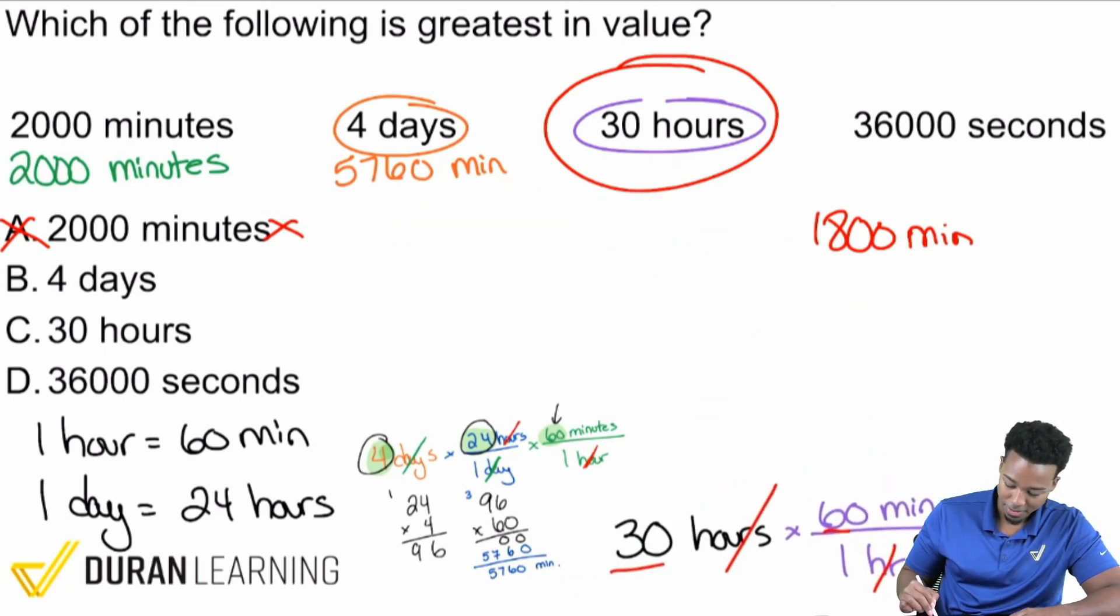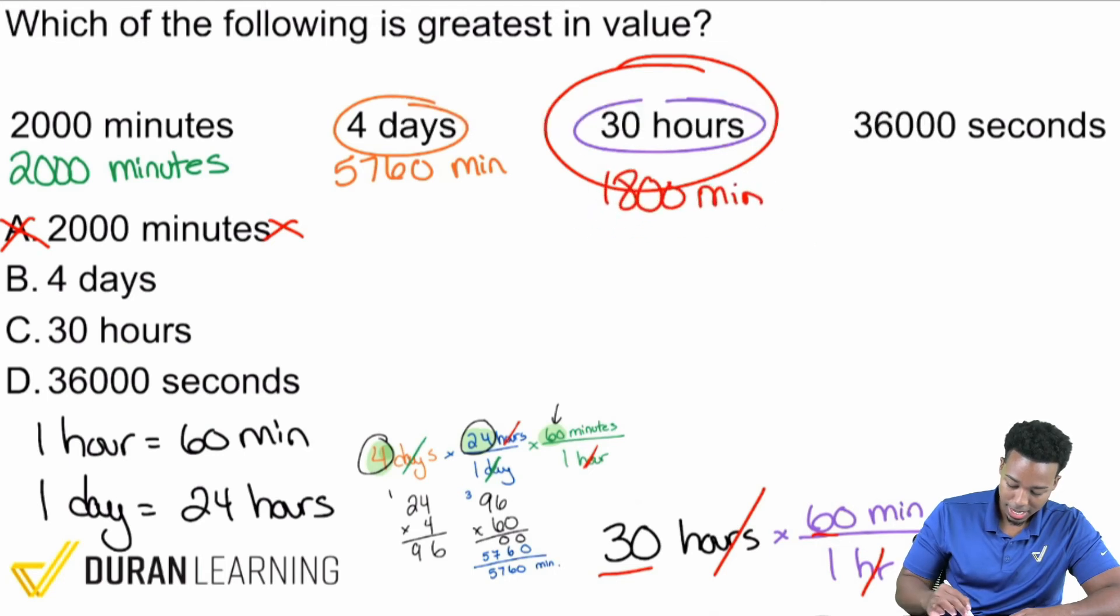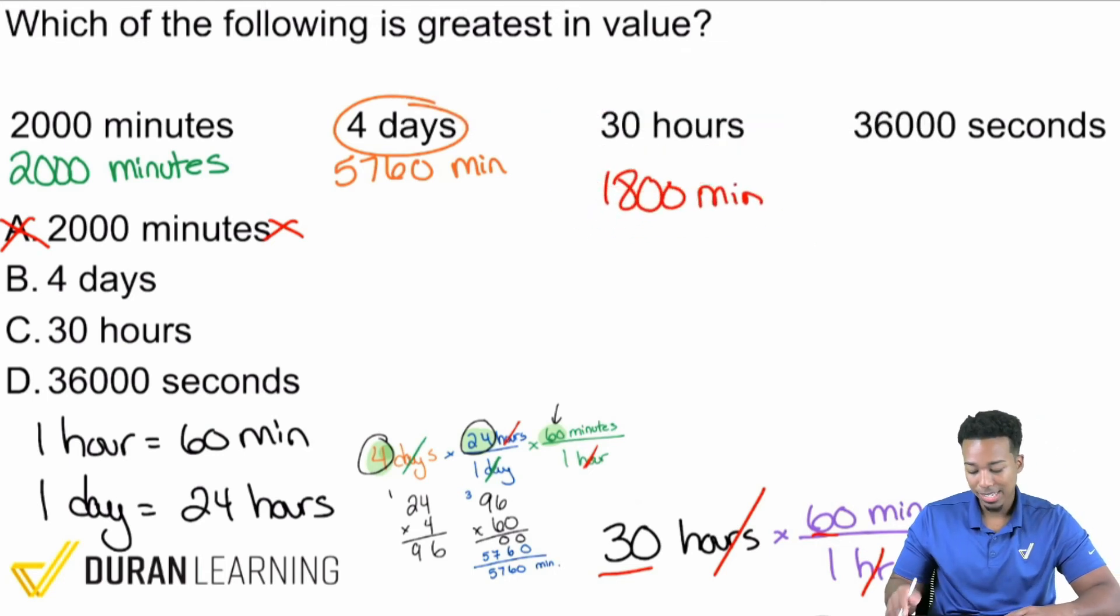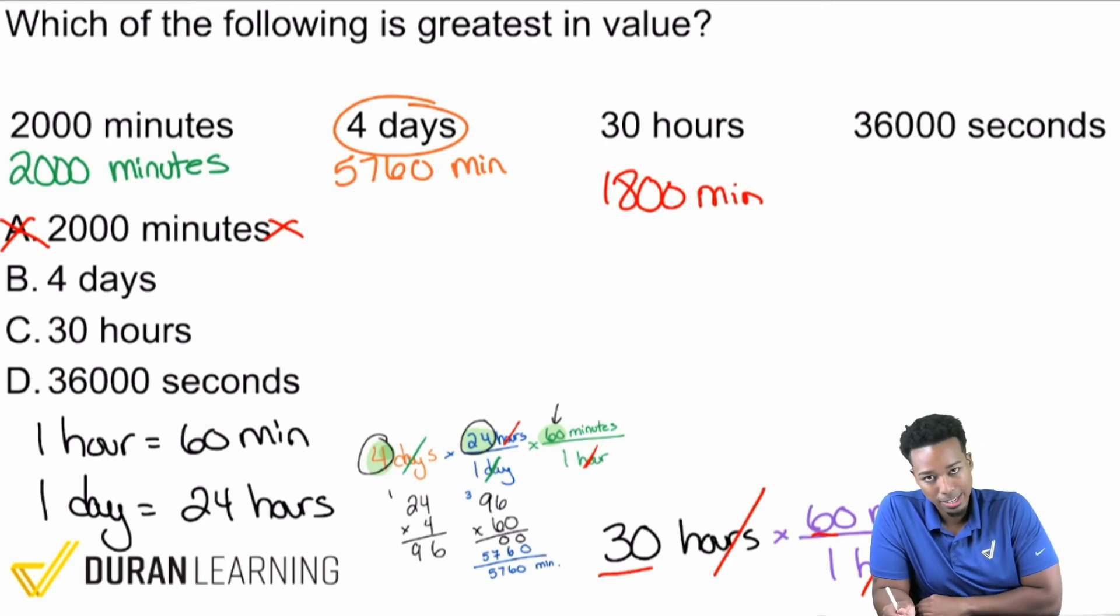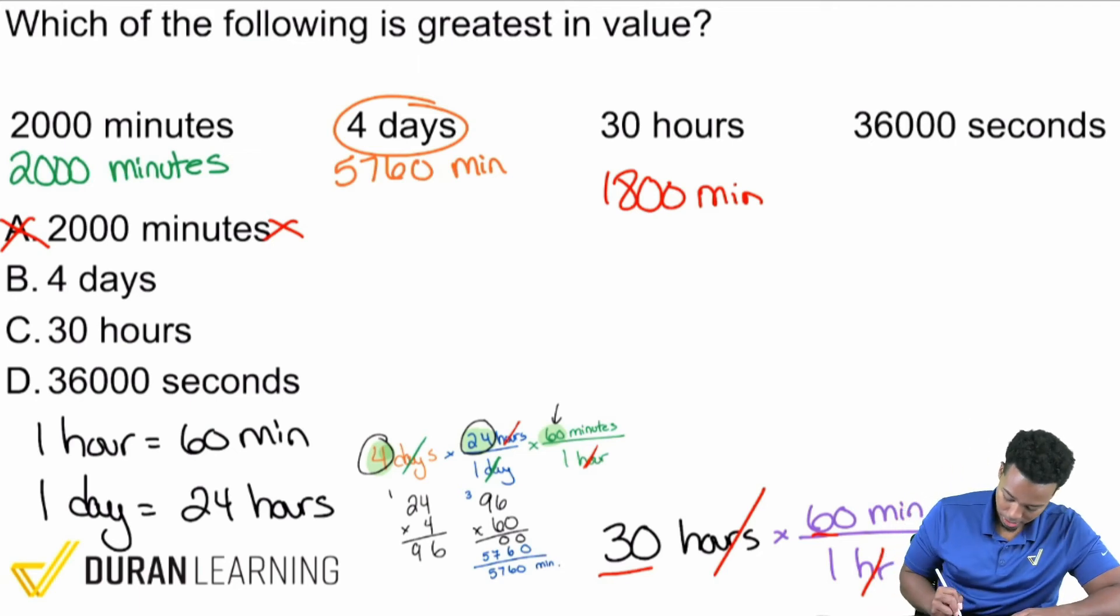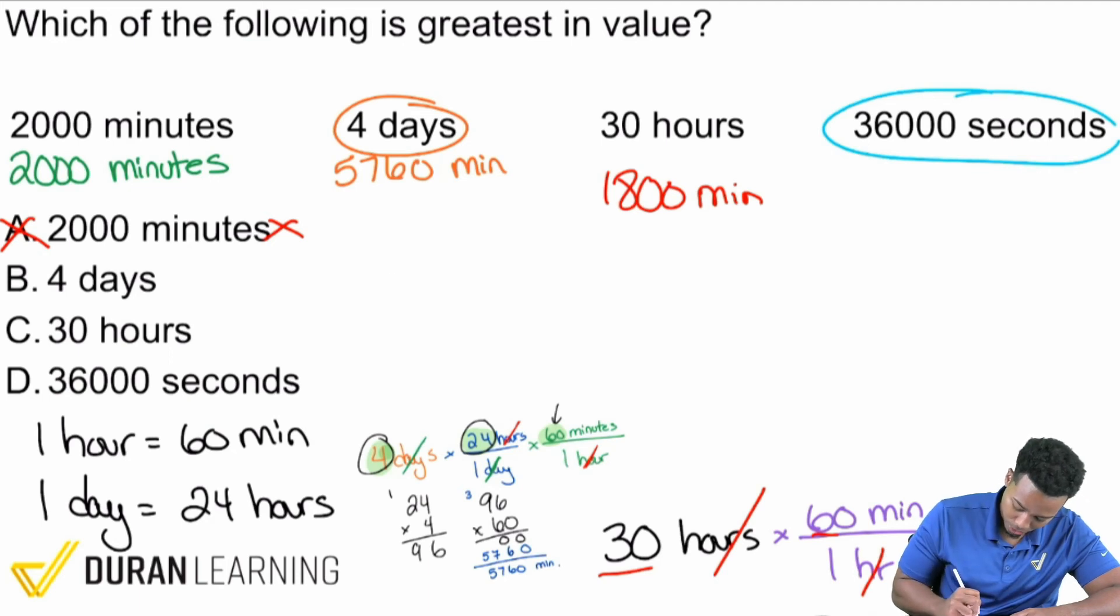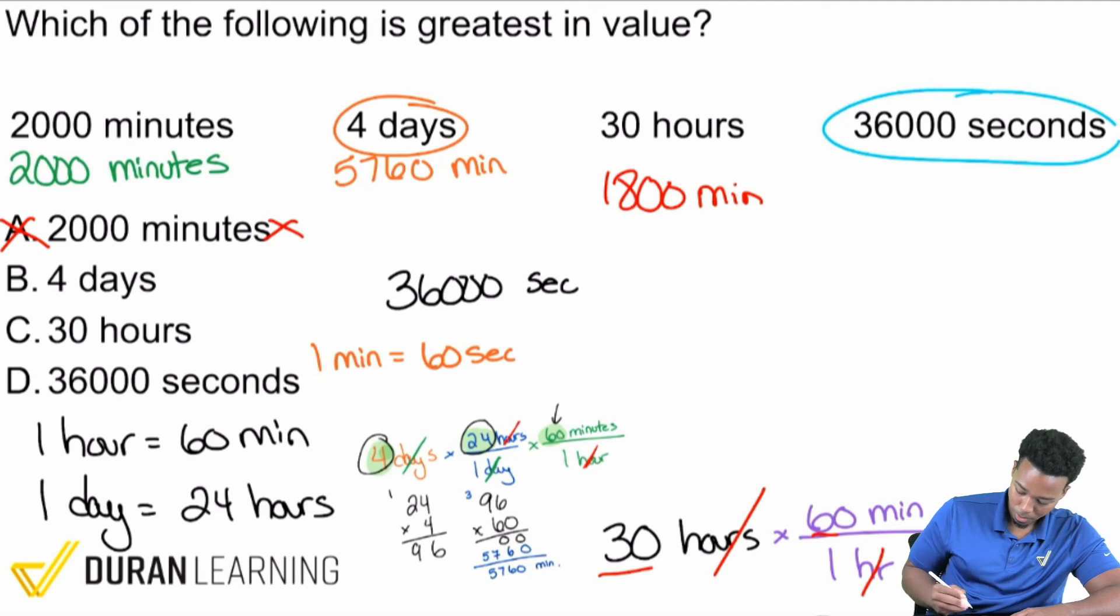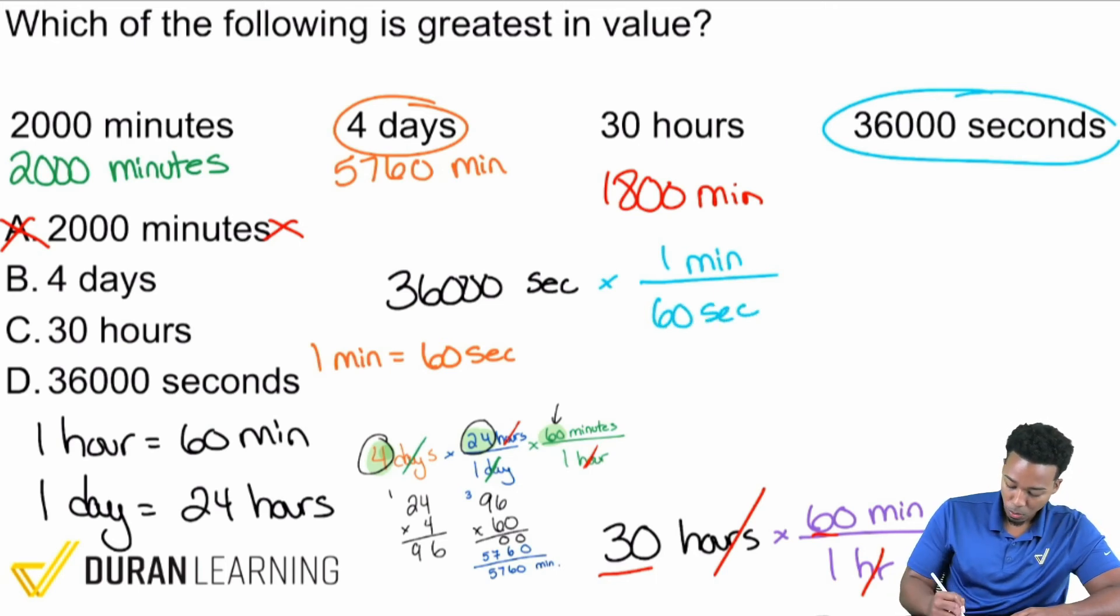Lastly, we've got 36,000 seconds. So we start off with 36,000 seconds. To turn seconds into minutes, remember that the conversion rate is going to be one minute equals 60 seconds. So the conversion rate that I'll use here: one minute over 60 seconds. Notice how the number is now on the bottom because we need to cancel out seconds to get minutes. And so therefore we are dividing.